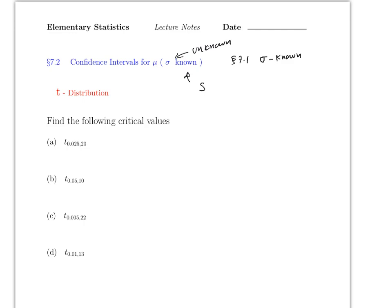This section is almost identical to section 7.1 except that step 1 is different. In section 7.1, step 1 was always given — values like 1.96, 2.58, and so forth. Now these values are going to be different every time, so we need a new table: the t-distribution table, which is available on Canvas in the same place as the standard normal table.